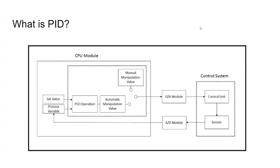Let's continue to define what PID is. Maybe some people are visual learners — so let's look at it from the PLC perspective. The CPU module is the PLC. As you can see, there are a couple variables: we have a set value (SV), a process value (PV), and the PID operation — that's the formula happening within the CPU. It does calculations based on the set value and the PV and then generates an automatic manipulation value.